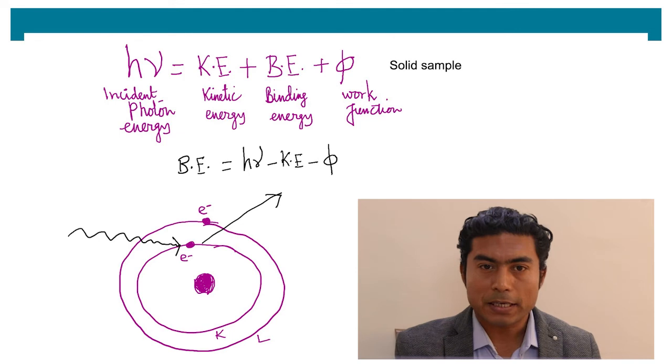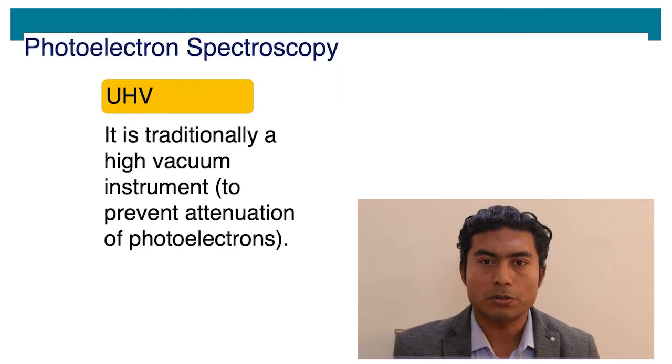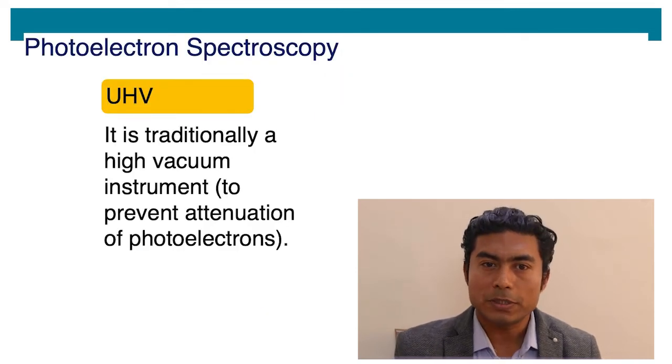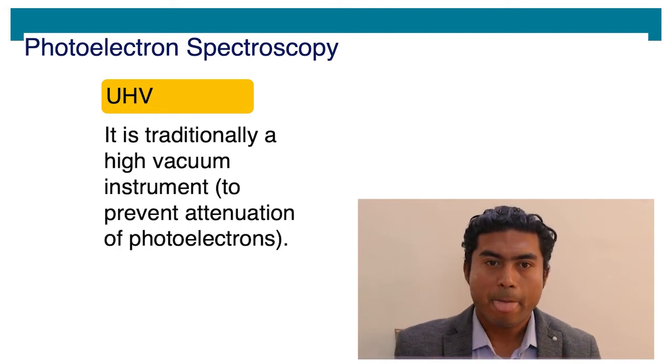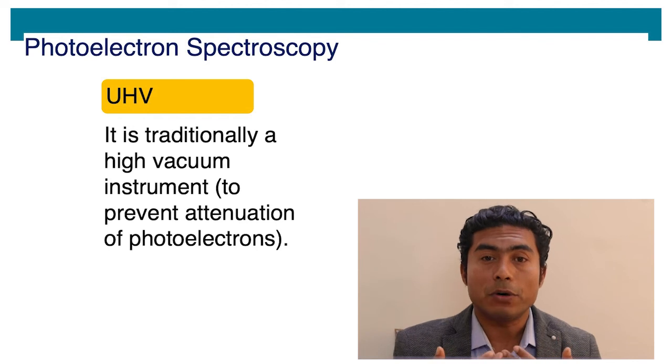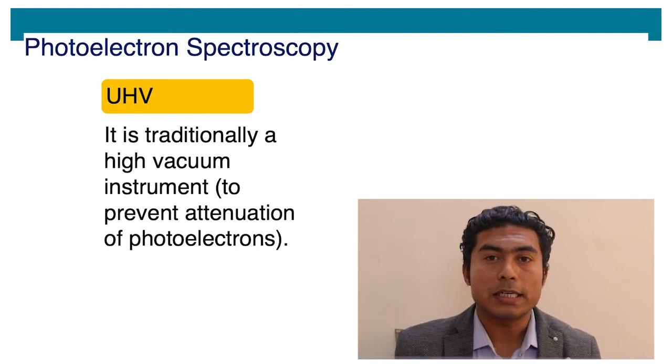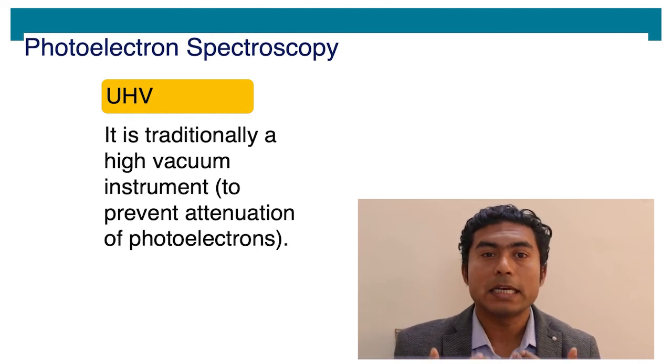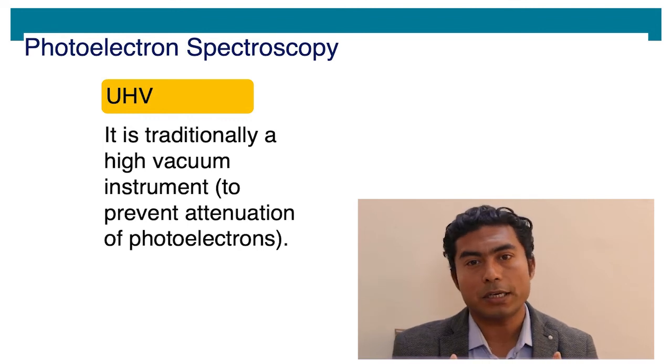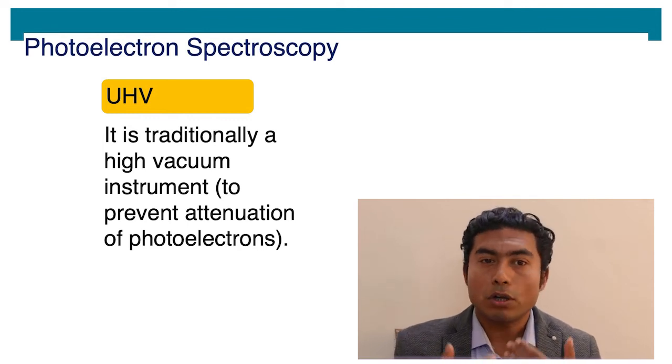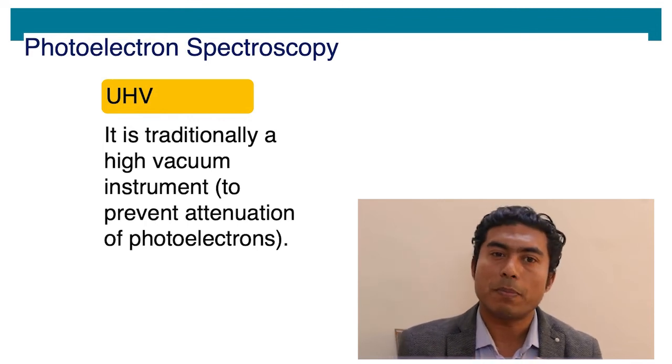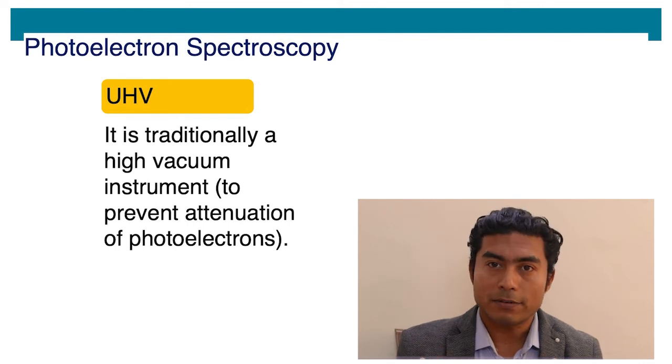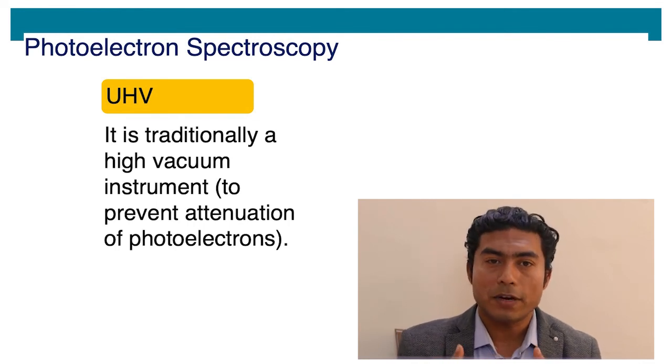Another aspect of photoelectron spectroscopy is that it is a vacuum technique like many other state of the art techniques. The reason we need vacuum is that x-ray sources and electron analyzers need a vacuum for their operations and also electrons have very low inelastic mean free path in case of collision with particles. So they cannot survive. This is the reason we need very high vacuum.